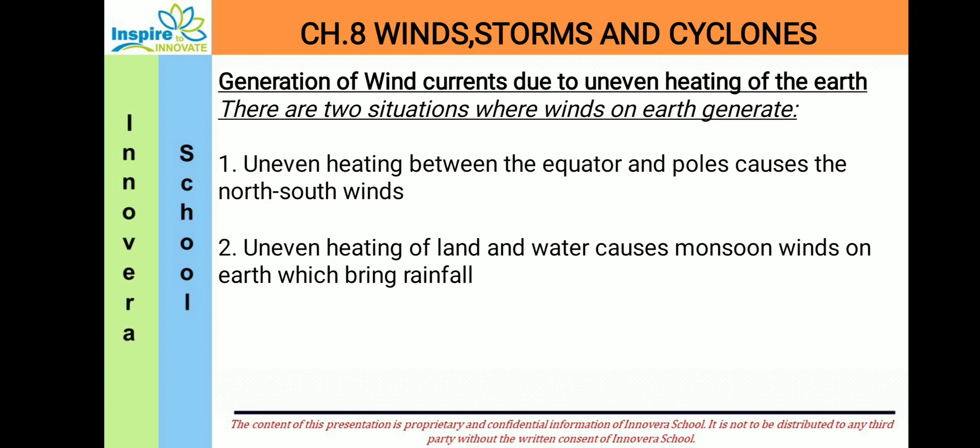Based upon this, there are two situations. The first one is: uneven heating between the equator and poles causes the north-south winds. The second is: uneven heating of land and water causes monsoon winds on earth, which brings rainfall.